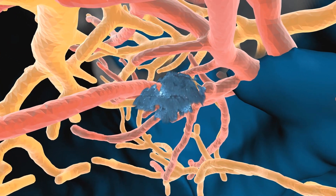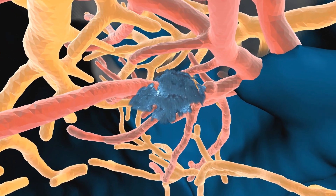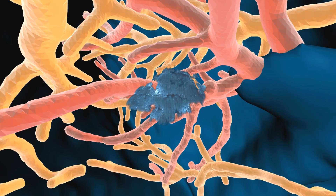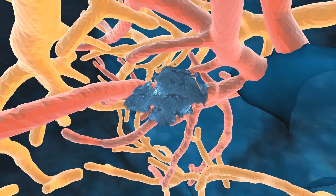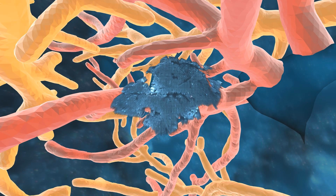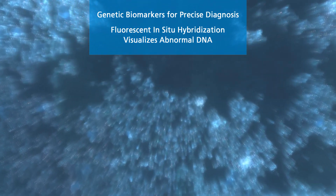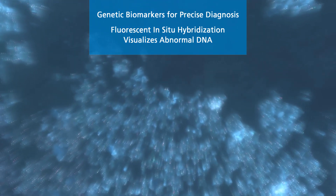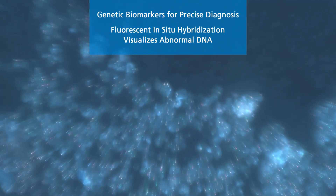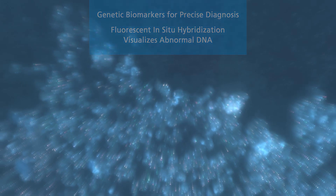We move into a thumbnail-sized sample of digitized microscopic lymphoma tissue examined with a molecular cytogenic technique called FISH, which stands for fluorescent in-situ hybridization. This staining technique is used to detect genetic biomarkers and specific abnormal DNA changes for precise diagnosis.